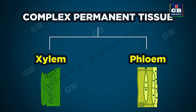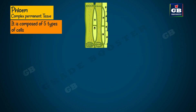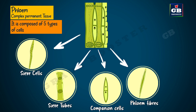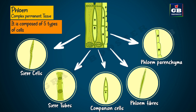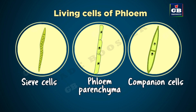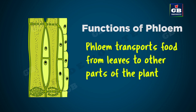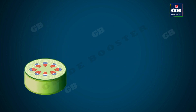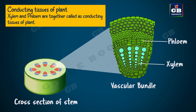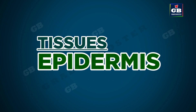Phloem is made up of five types of cells: sieve cells, sieve tubes, companion cells, phloem fibers, and phloem parenchyma. Sieve tubes are tubular cells whose cell walls are perforated. Phloem fibers are dead cells; all remaining phloem cells are living. Phloem transports food from leaves to other parts of the plant. Xylem and phloem join together to form a vascular bundle and are called the conducting tissues of the plant.